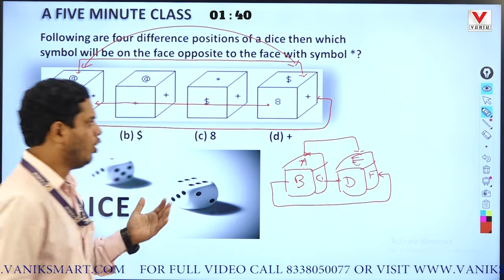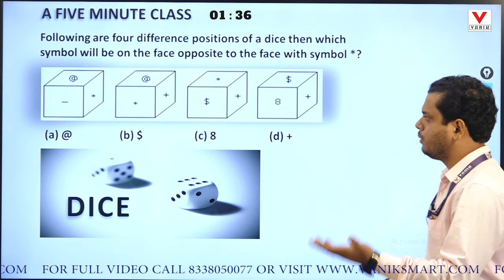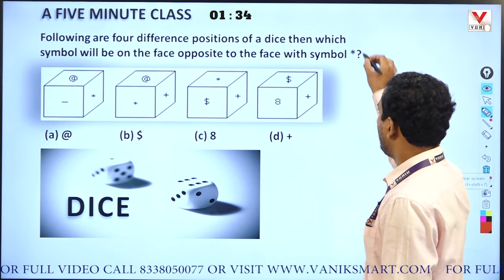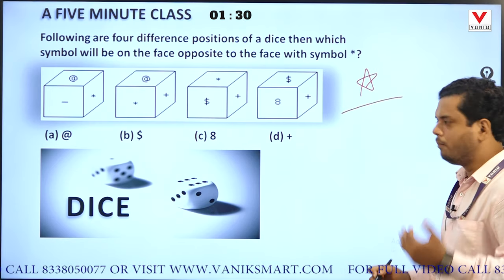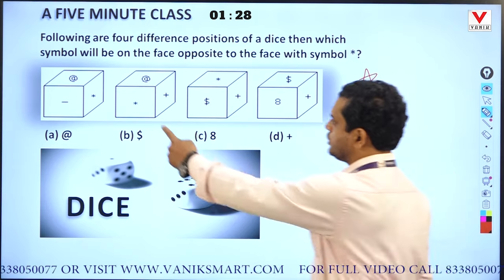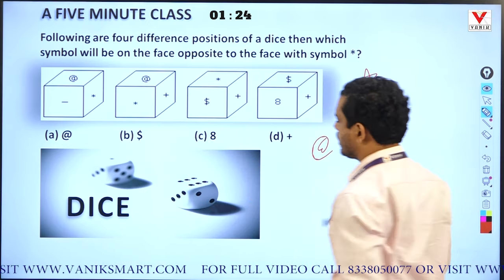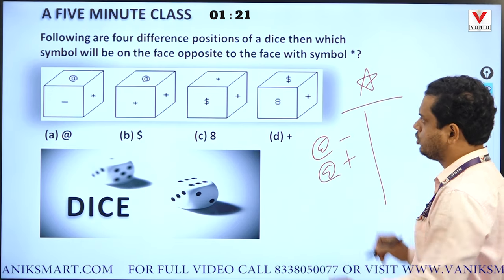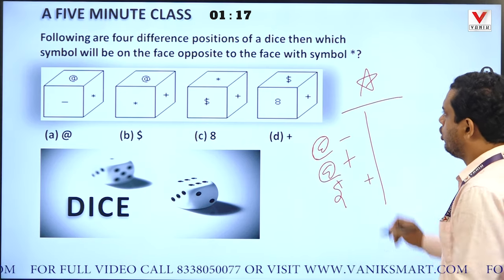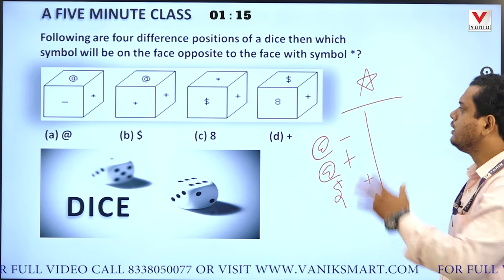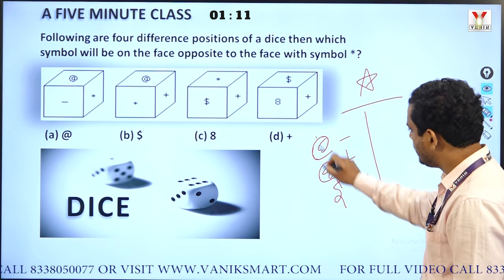Finally we have adjacent comparison method. Adjacent comparison method means: here star is given, so I'll find all the adjacent faces of star. Here star's adjacent faces are at-the-rate and minus. Here star's adjacent is at-the-rate and plus. Here star's adjacent is dollar and plus. Here there is no information about star.